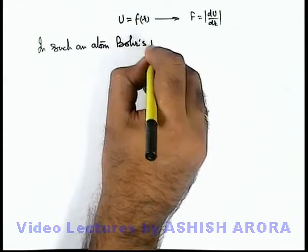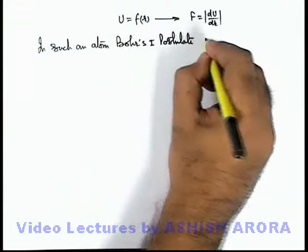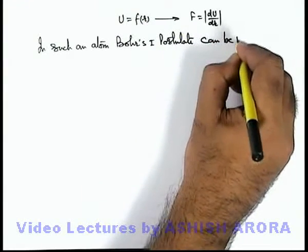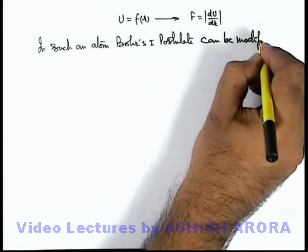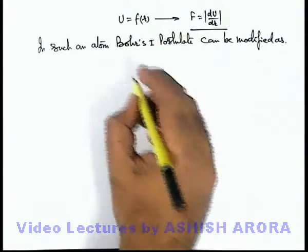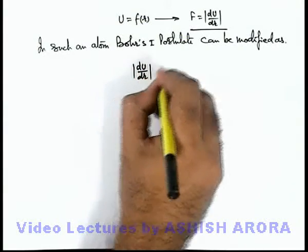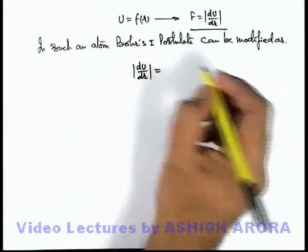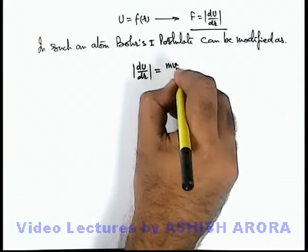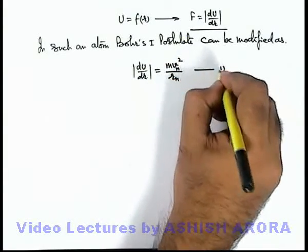Bohr's first postulate can be modified as: in this situation, the bounding force on electron by the nucleus, |dU/dr|, will be providing the centripetal force or balancing the centrifugal force as mvₙ²/rₙ. That will be the first equation.